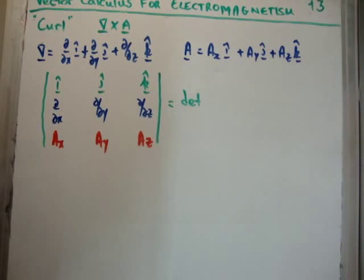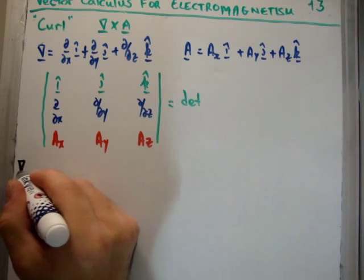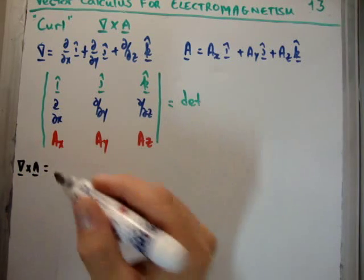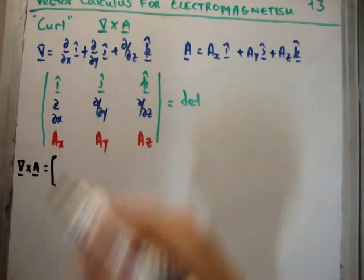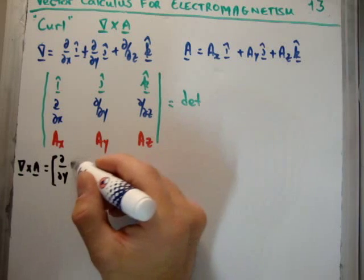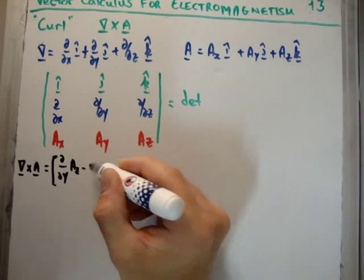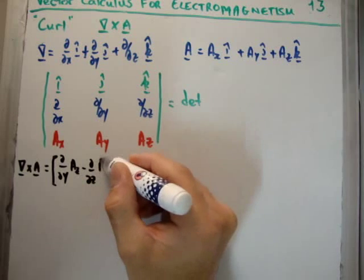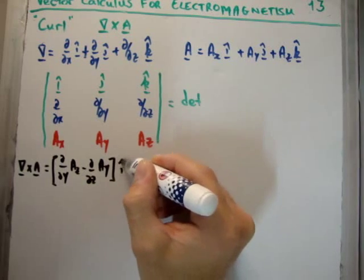I am not going to discuss how to do it, look in my video number 3 if you want to discuss cross products, but I am going to do it here. So that means if we take the curl of our vector A, giving us back a vector of course, we are going to get del/del y of A_z minus del/del z of A_y in the i hat direction.